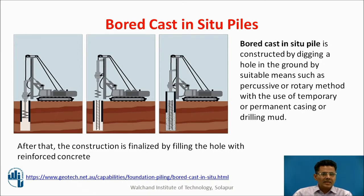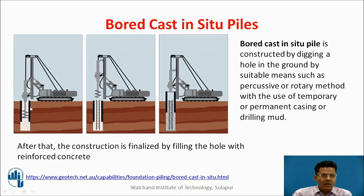Now let us discuss bored cast in-situ piles. Bored cast in-situ piles are constructed by digging a hole into the ground by suitable means such as a percussive or rotary method, with the use of temporary or permanent casing or drilling mud. A pile drilling operation uses an auger to remove the soil, after which a reinforcement cage is inserted and the pile is concreted. Sometimes the casing can also be kept in place if required.